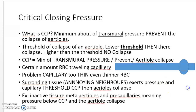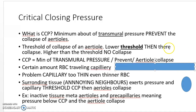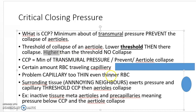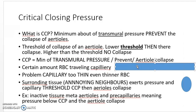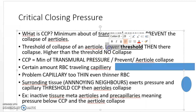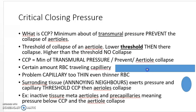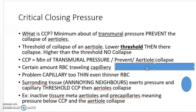Where else does pressure come from? Pressure also comes from the surrounding subendothelium. A capillary always has subendothelium, and there is pressure being exerted on the blood vessel from there. If the vessel has higher pressure than the critical closing pressure, the artery will be totally fine. But if the pressure is lower than the critical closing pressure, the surrounding endothelial tissue's pressure will cause it to collapse.